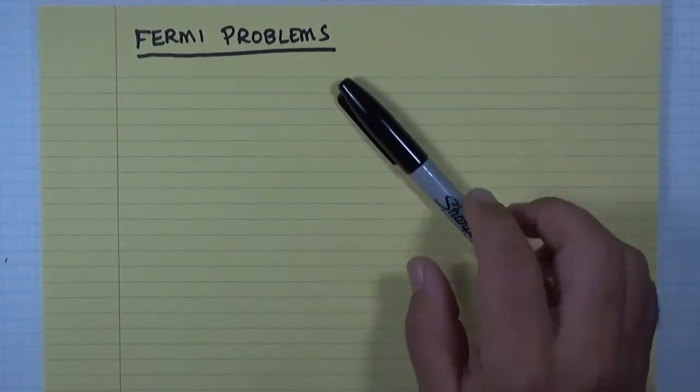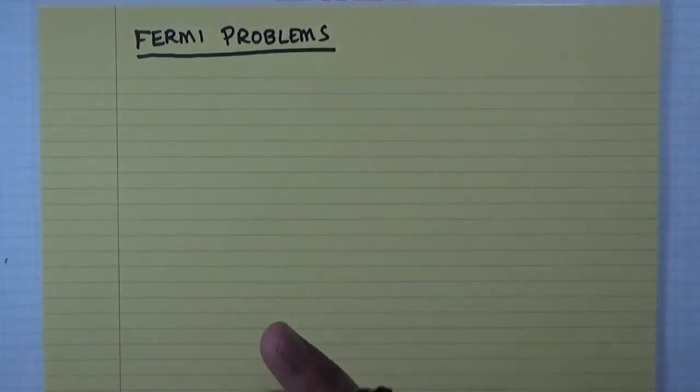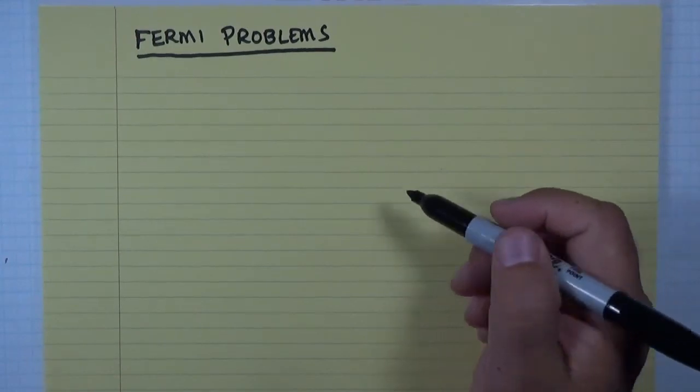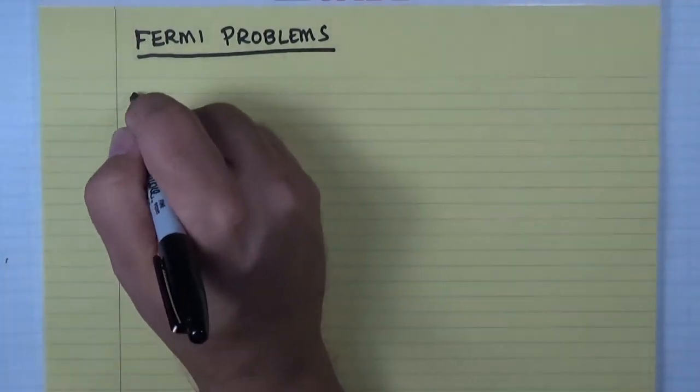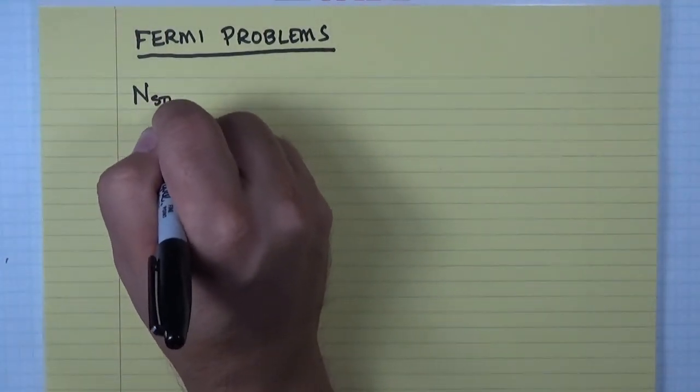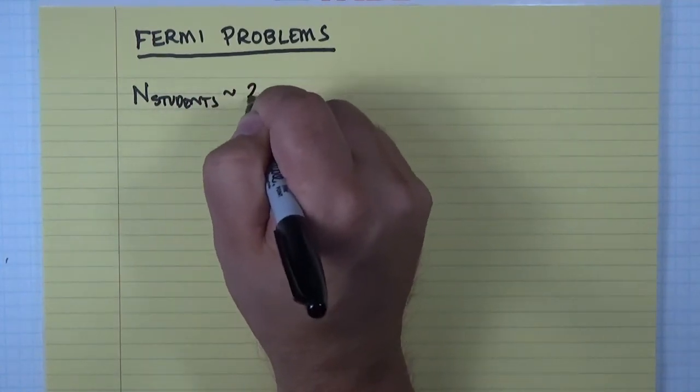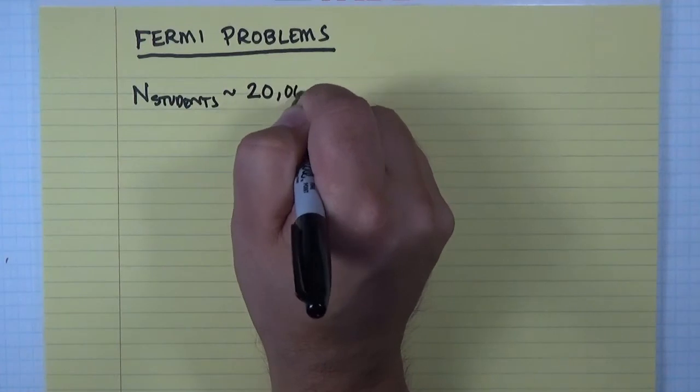So what do you need to know to estimate a number like that? Well, the first thing you need to know is how many students are there on campus. So on our campus, a typical number of students is about 20,000 students.